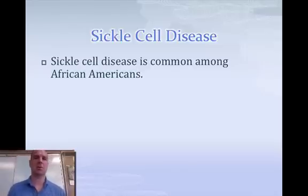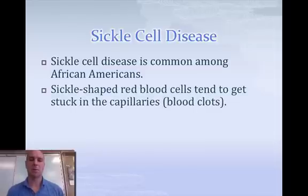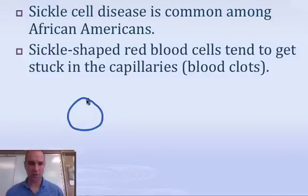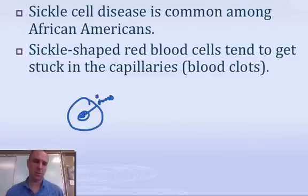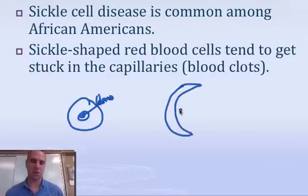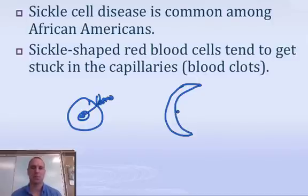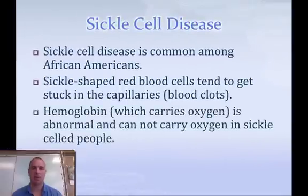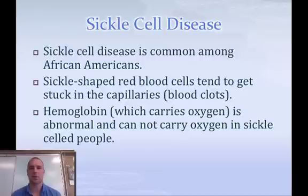Sickle cell disease is most common among African Americans. It affects the shape of red blood cells — a normal red blood cell is round, almost like a donut, holding hemoglobin in the middle, whereas a sickle cell is shaped like a sickle or crescent moon and is unable to hold hemoglobin. Interestingly, this is actually an advantage for people of African descent because malaria attaches to the protein hemoglobin, so if you have sickle cell disease you are immune to malaria.